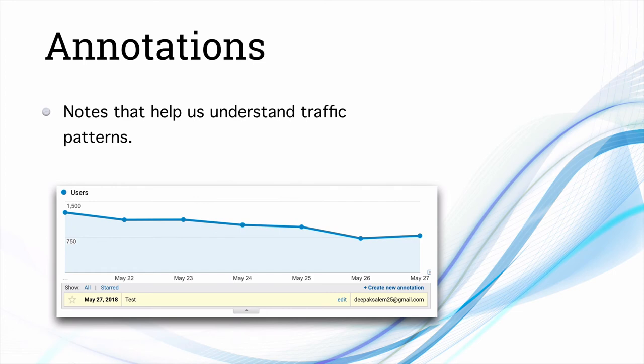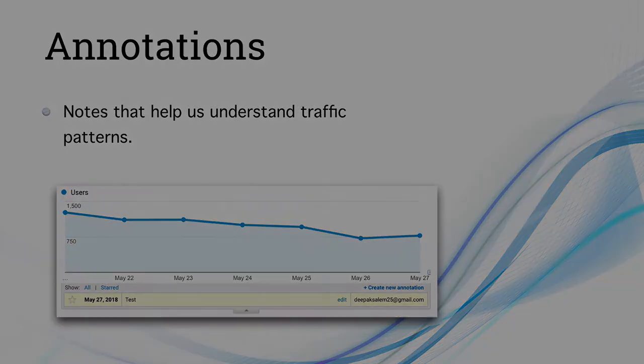The first one is annotations. Annotations are notes that help us understand traffic patterns. You can enter annotations inside your analytics account — here you can see one called 'test'. If there is a traffic spike and it was caused by an offline campaign, you might not understand why it occurred if you look at your analytics 6 months or a year later. So annotations help us record why a traffic spike or dip occurred.